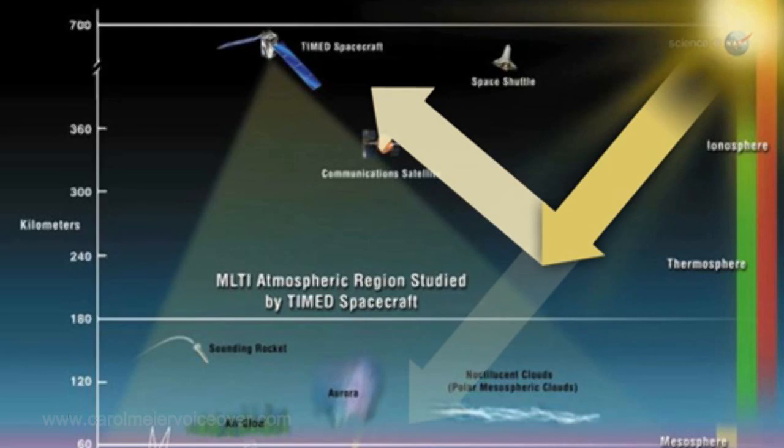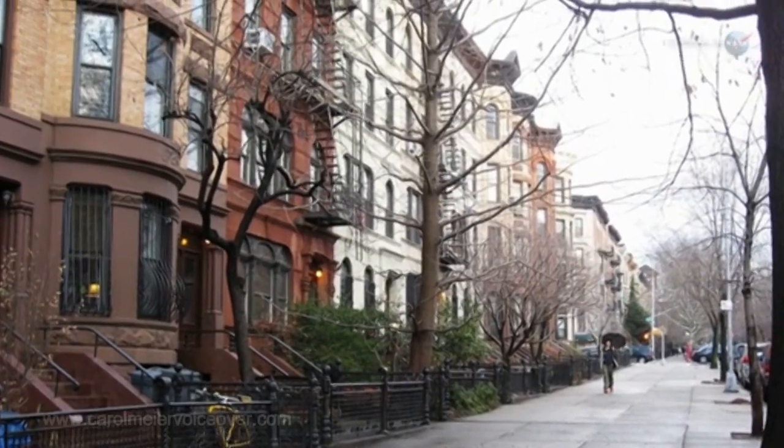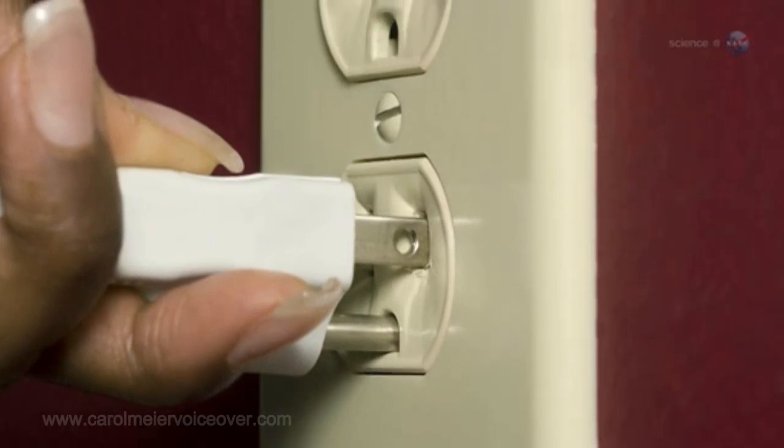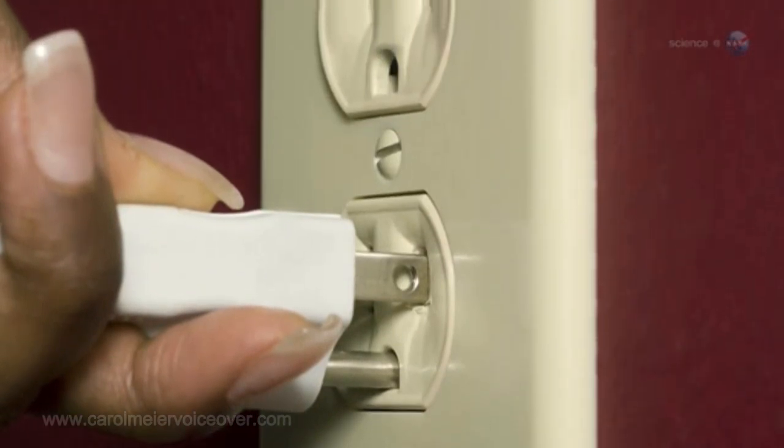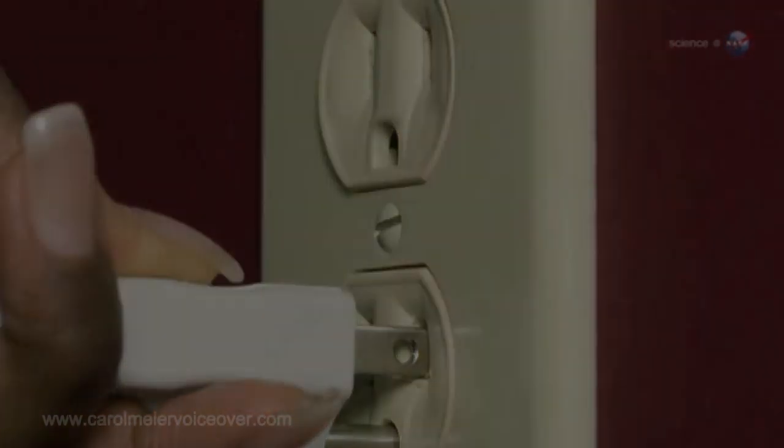In human terms, this is a lot of energy. According to the New York City Mayor's Office, an average New York household consumes just under 4,700 kilowatt-hours annually. This means that the geomagnetic storm dumped enough energy into the atmosphere to power every home in the Big Apple for two years.